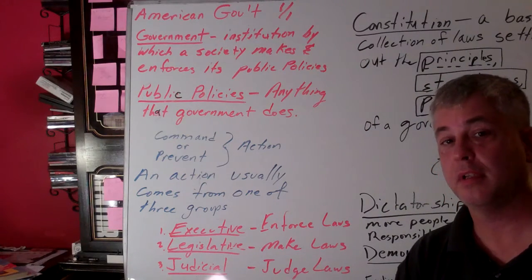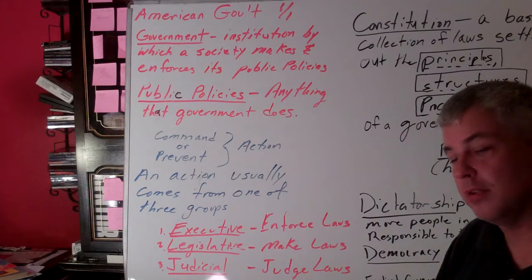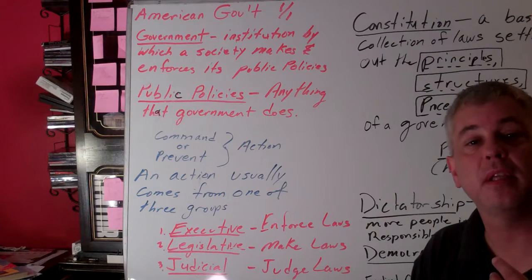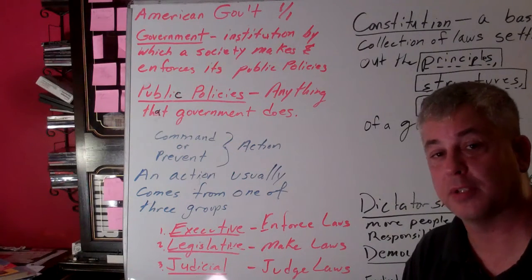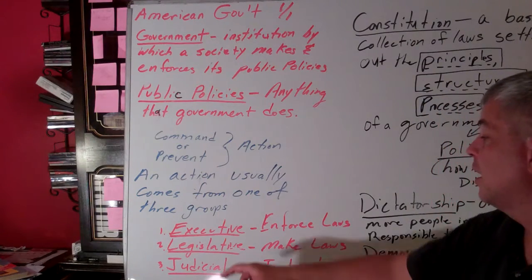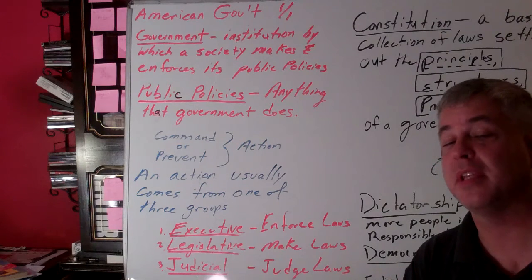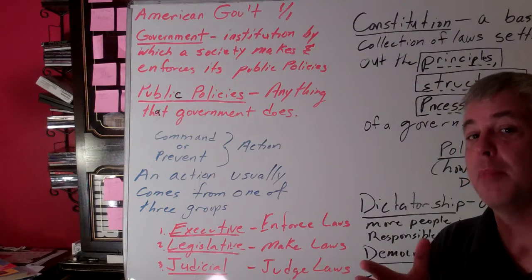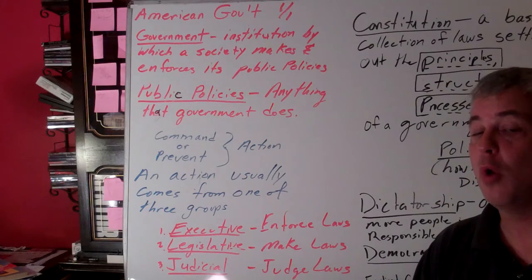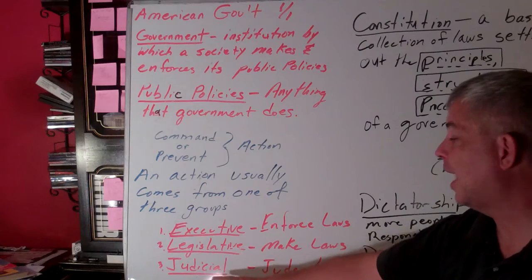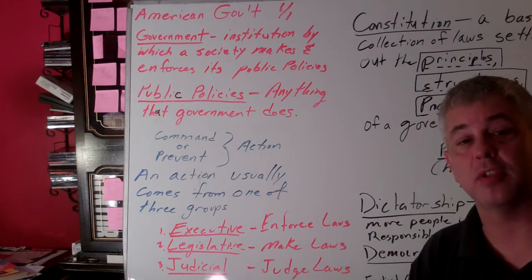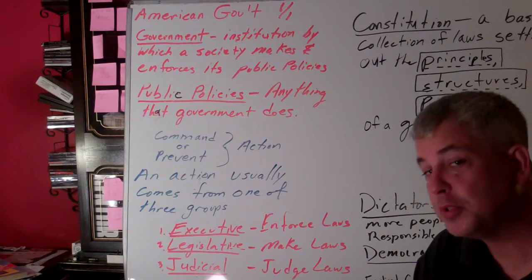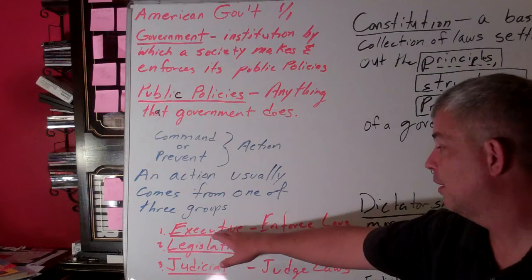Almost every government in the world has these things. I really need you to understand executive, legislative, and judicial. The executive is something that really goes out there and enforces the actual public policies — they're making sure they happen. Legislative are the people that actually write these laws and public policies; they don't go out and make sure they happen, they just come up with the ideas and figure out what language they're supposed to take. And the last is the judicial — they judge laws and try to figure out how the public policies are supposed to be interpreted.